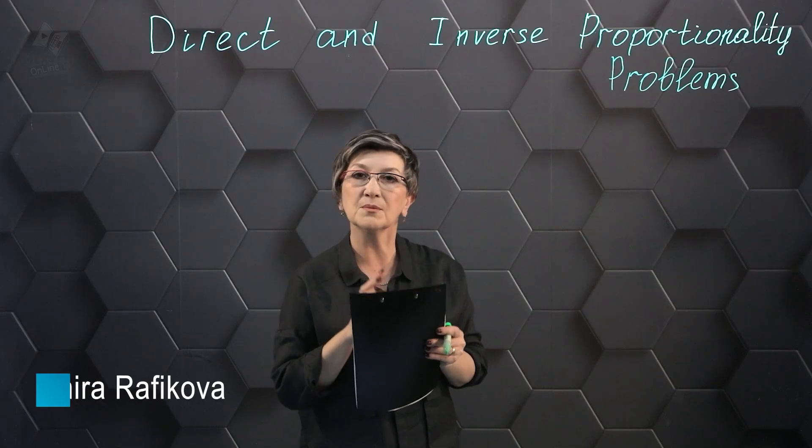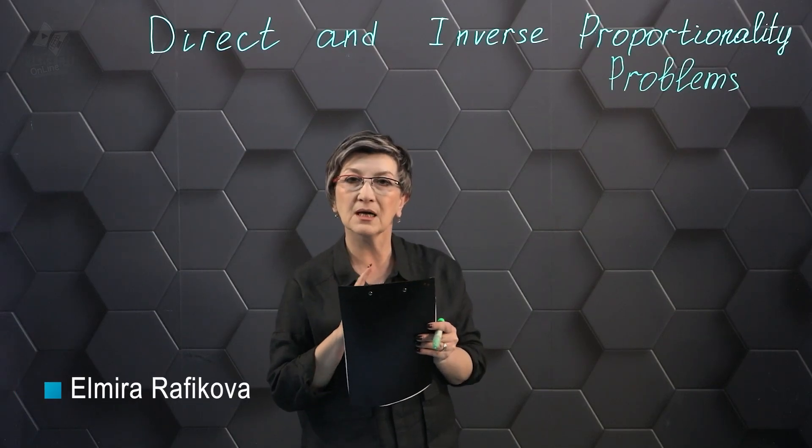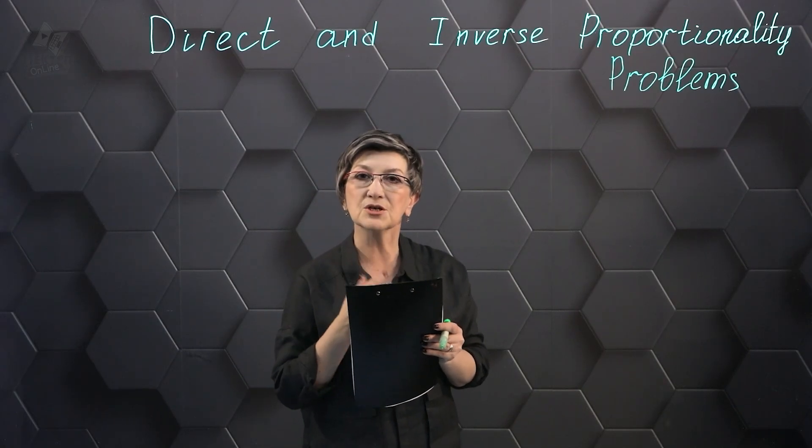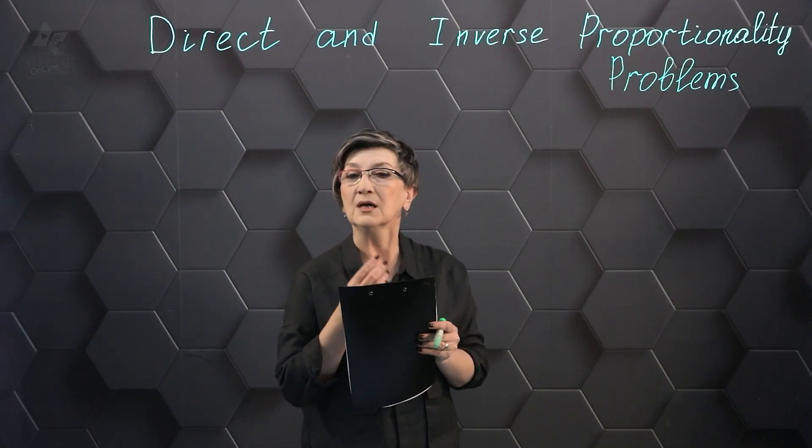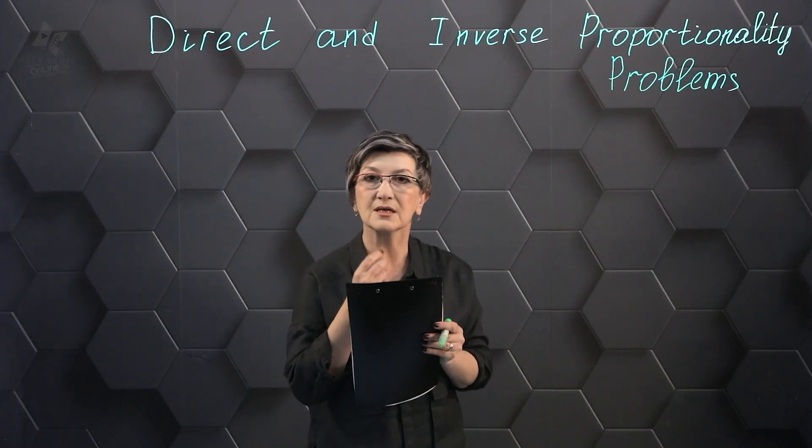Hello! Today in class we are going to continue solving problems with directly proportional and inversely proportional quantities. But in our problem, which we will solve today, some quantities are unknown and these are two quantities. How do we solve these problems?